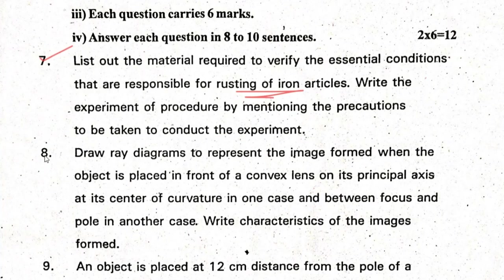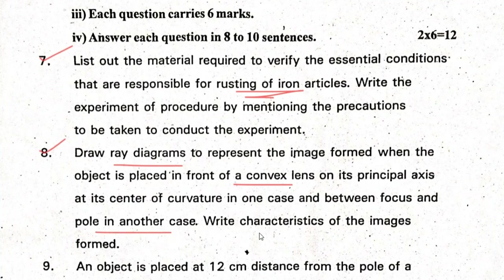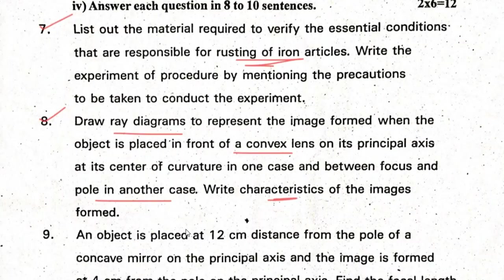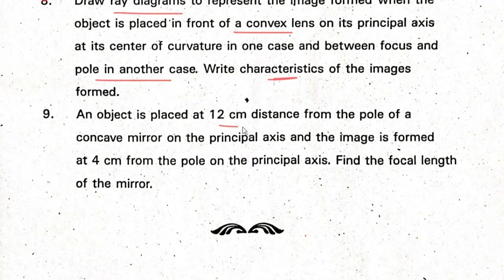List out the materials required to verify the essential conditions that are responsible for rusting of iron articles. Draw a ray diagram to represent the image formed when the object is placed in front of a convex lens on its principal axis at its center of curvature in one case, and between focus and pole in another case. Write the characteristics. An object is placed at 12 cm distance from the pole of a concave mirror on the principal axis and the image is formed at 4 cm from the pole on the principal axis.